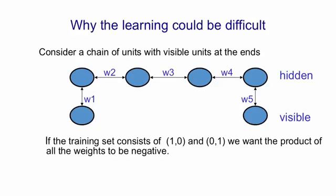So, for example, if all the weights are positive, turning on W1 will tend to turn on the first hidden unit, and that will tend to turn on the second hidden unit, and so on, and the fourth hidden unit will tend to turn on the other visible unit. If one of those weights is negative, then we'll get an anti-correlation between the two visible units.